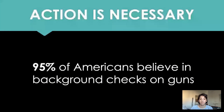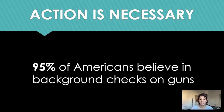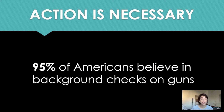Just to drive this point home: the gun control movement has numbers that we in the Medicare for All movement would kill for. 95% of Americans believe in background checks on guns in all settings, including gun shows and more informal settings. But we do not have a law passed requiring any such thing — and education isn't actually the problem here. The problem is that the gun control movement has so far failed to leverage all that 95% support into accountability of those in power. Many movements, including our Medicare for All movement, are in danger of this. We need to make sure we're actually moving people into positions of organizing roles.